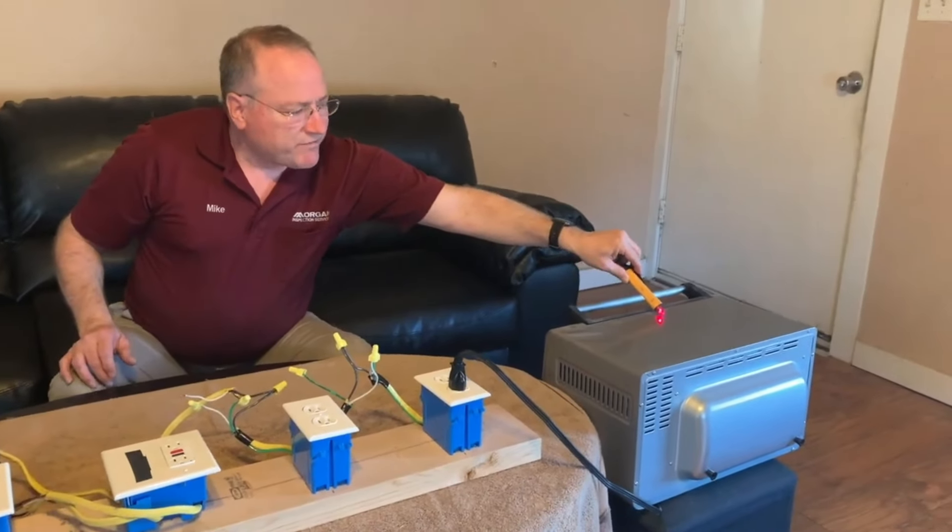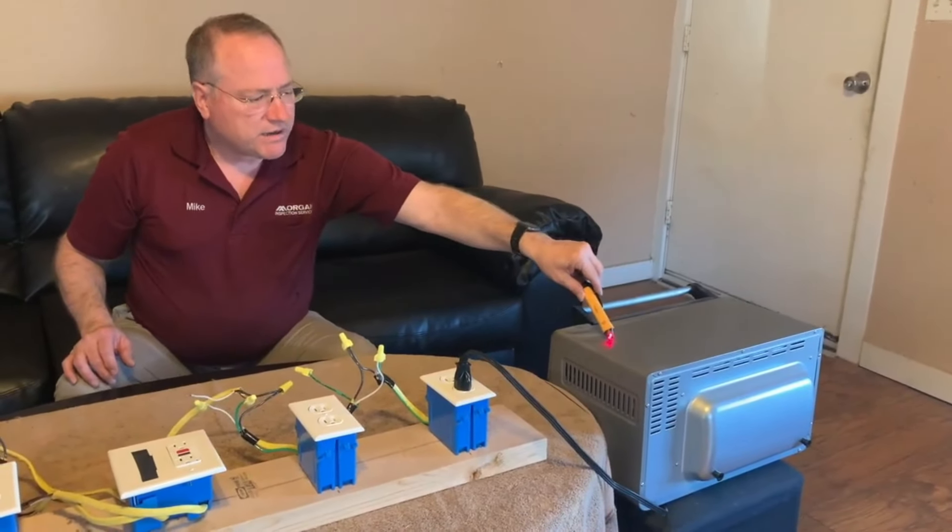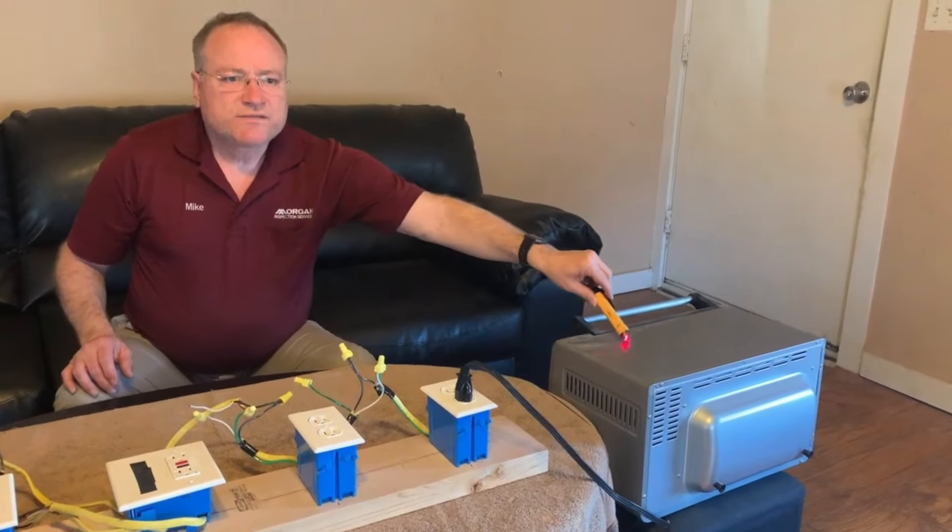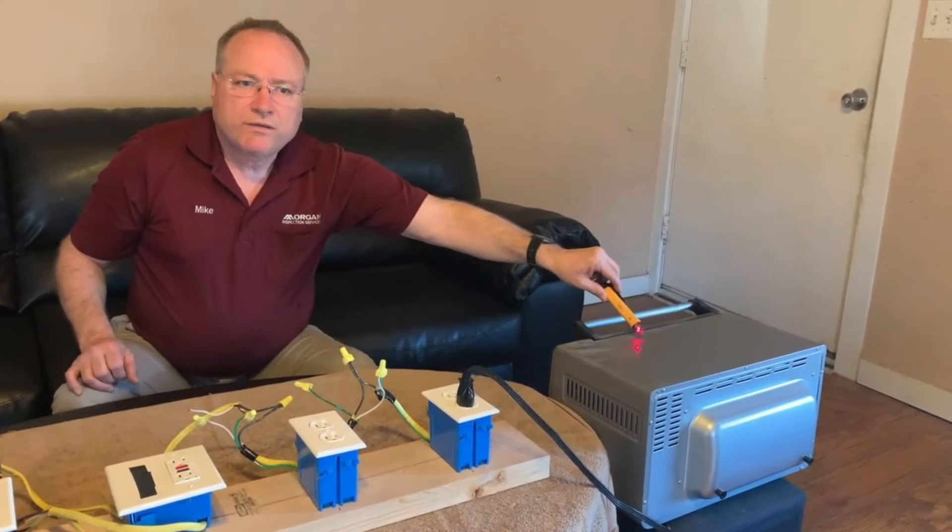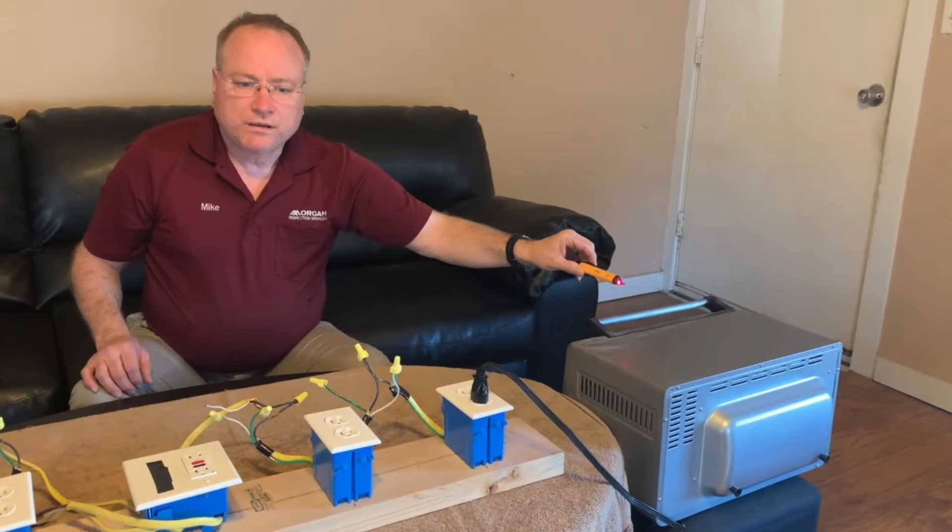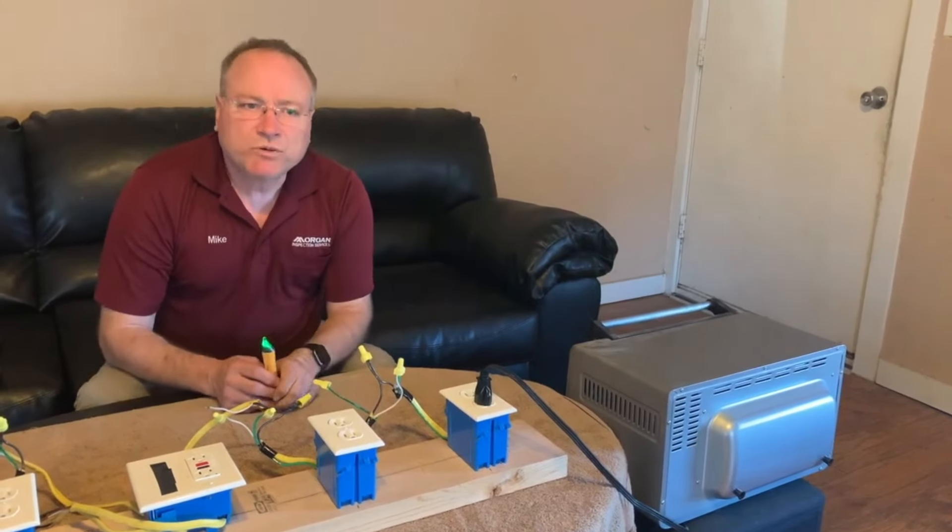And with my voltage detector, let me show you what we've got. The shell or the frame of this toaster oven is live. It's got 120 volts. If someone were to walk up to this and touch it, they could easily be electrocuted. That's the danger of bootleg grounds.